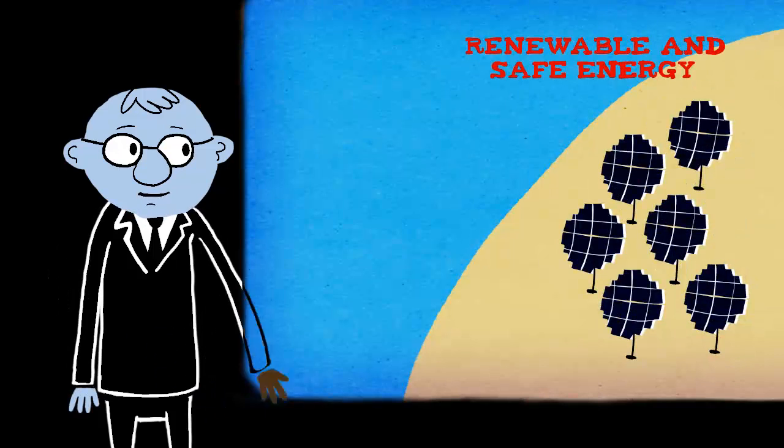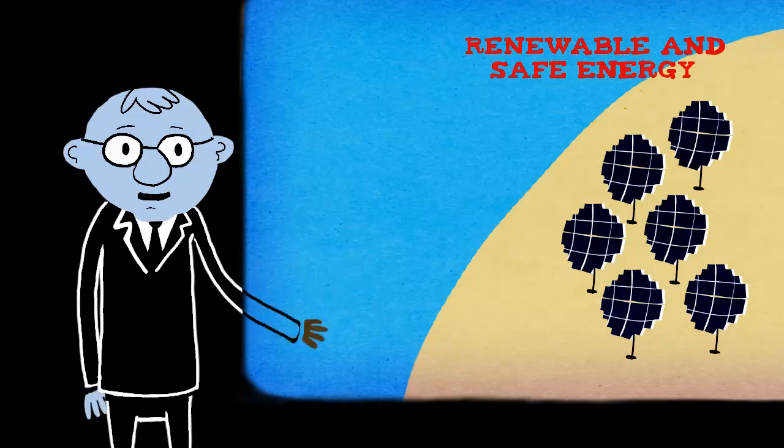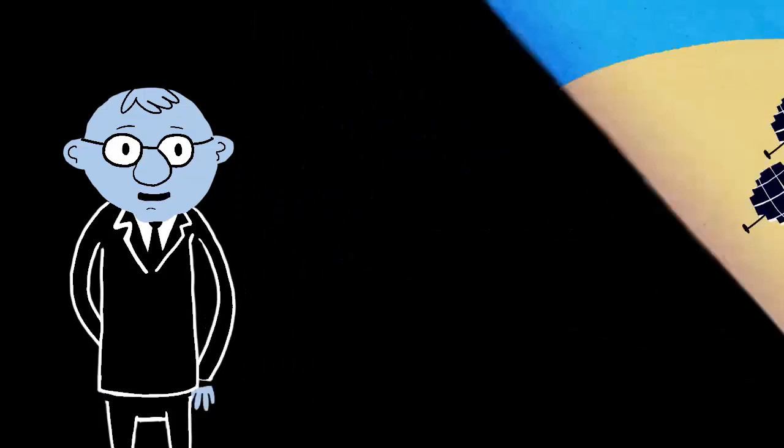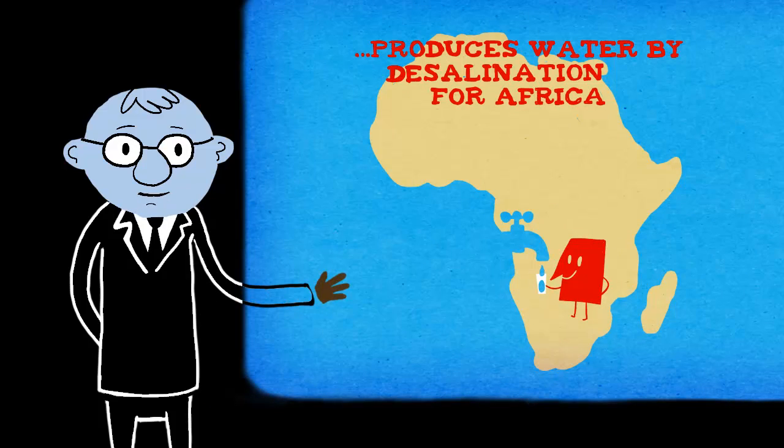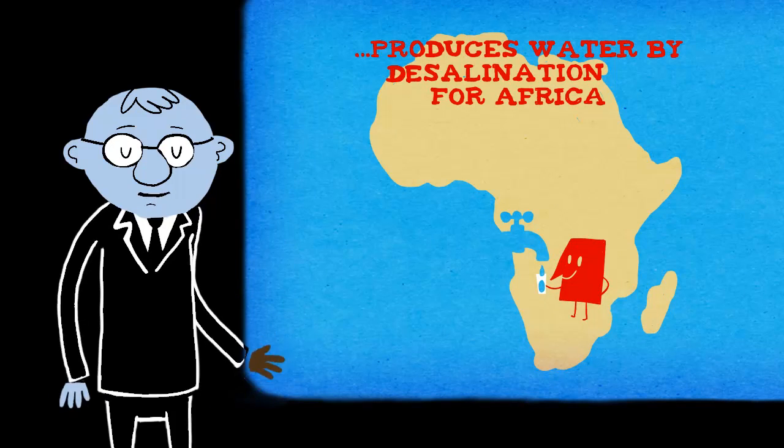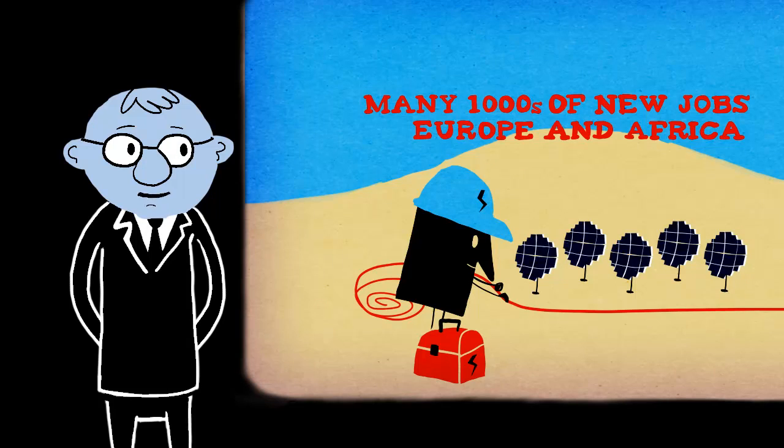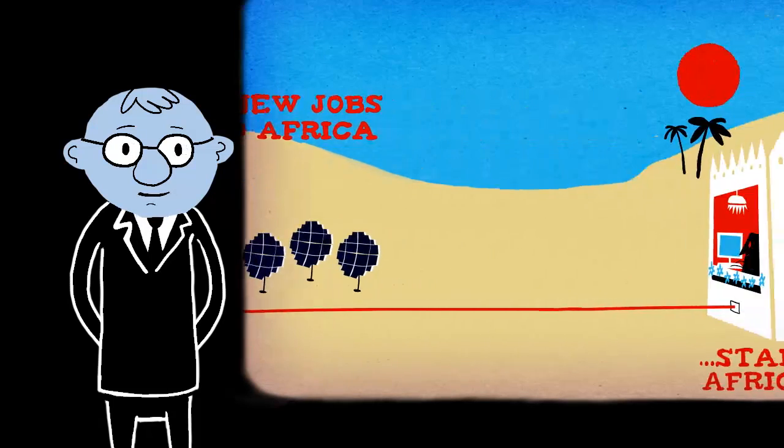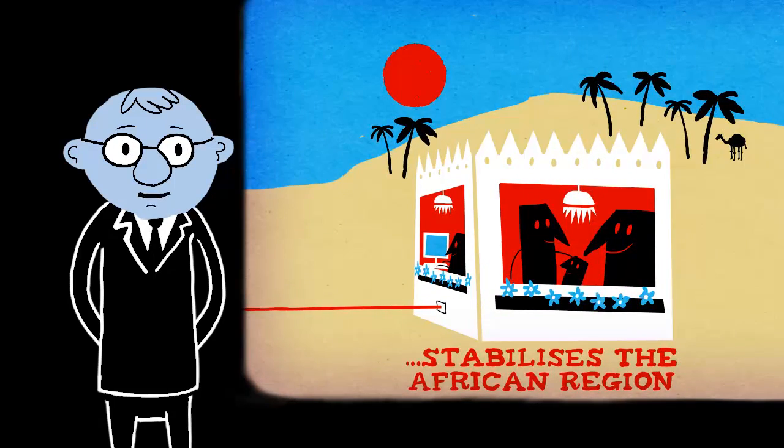Desert Tech solves four key problems. It produces renewable and safe energy. It produces water by desalination for Africa. It produces hundred thousands of new jobs in Europe and in Africa. And it has peacekeeping incentives because it stabilizes the African region.